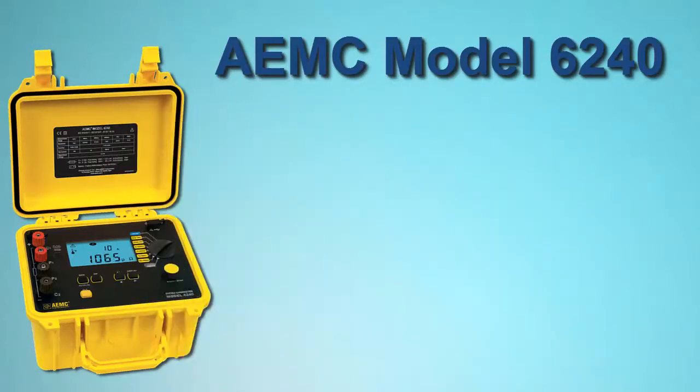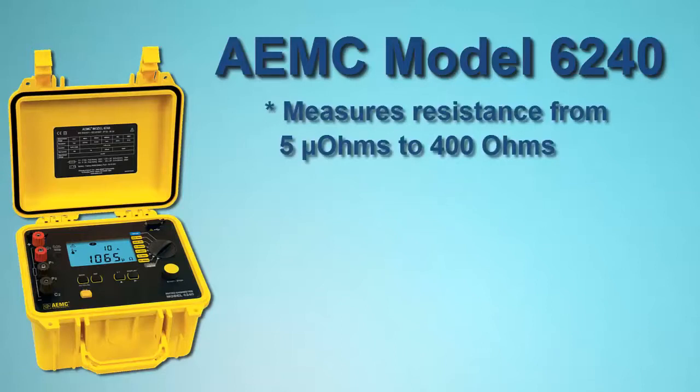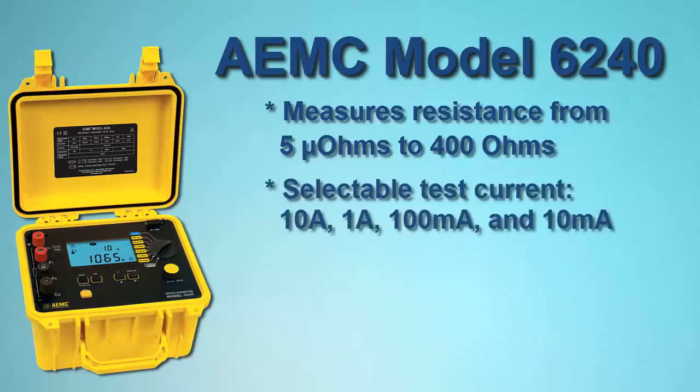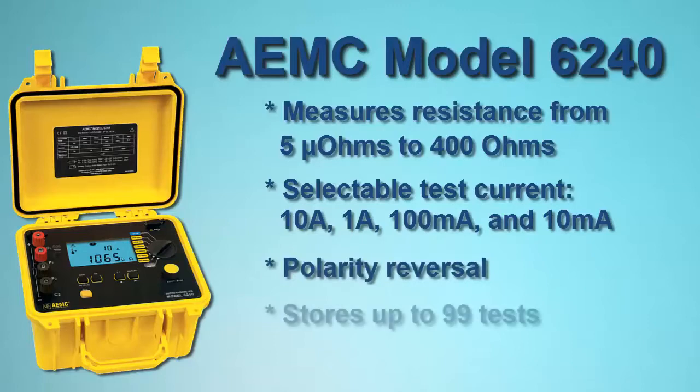The Model 6240 measures resistance from 5 microohms to 400 ohms. The instrument provides selectable test currents of 10 amps, 1 amp, 100 milliamps and 10 milliamps, and includes a polarity reversal function. Up to 99 measurements can be stored in memory.